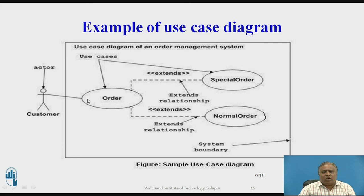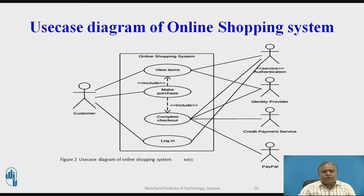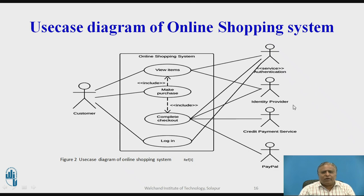Then a use case diagram of an online shopping system. Here the customer interacts by viewing all items, purchasing items, checking out from the system, and logging into the system. The authentication identity provider, credit payment service, and PayPal are administrative actors. The customer and these administrative actors interact with use cases such as make purchase, complete checkout, and login. These are the use cases of the online shopping system.